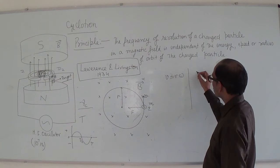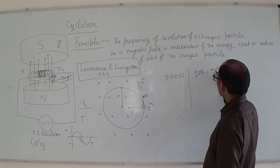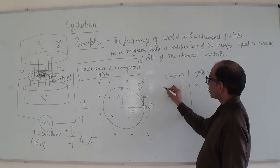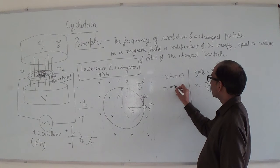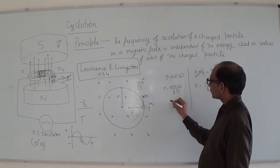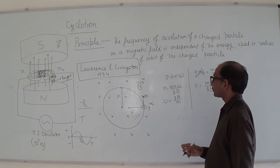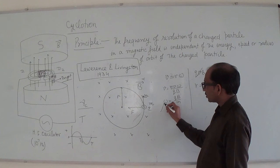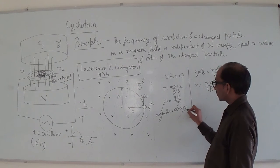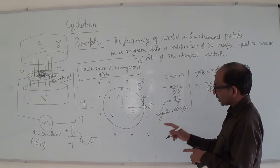The magnetic force acts like a centripetal force, so qVB equals mv²/R. From here, we get R equals mv/(qB). Substituting R into V = R*omega gives omega equals qB/m. So omega, the angular velocity of the charged particle, equals qB/m.